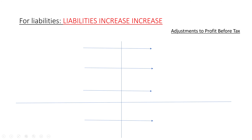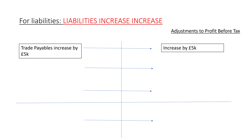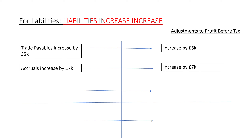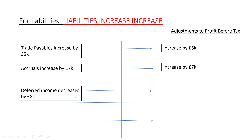For liabilities, if we increase liabilities we increase profit before tax. If trade payables increase by £5K, you increase by £5K — increasing trade payables means you're paying suppliers less, so there's less cash outflow and a higher cash profit. Accruals increase by £7K — increase by £7K — more unpaid expenses means less cash outflow. For a liability like deferred income decreasing by £8K, you also decrease by £8K. The sign — plus or minus — is always the same for liabilities.